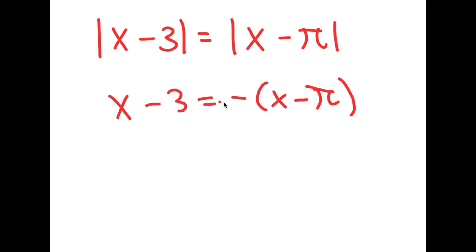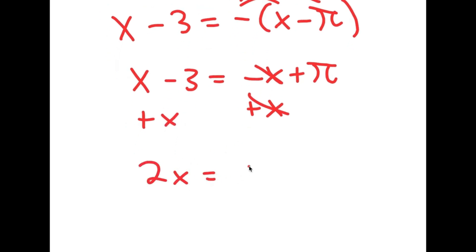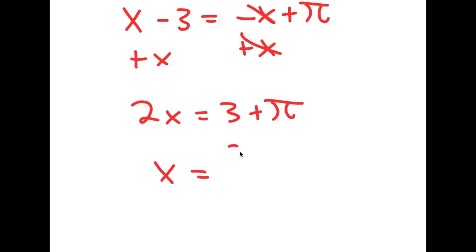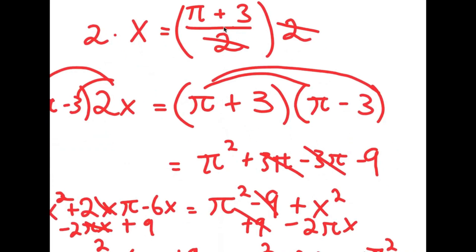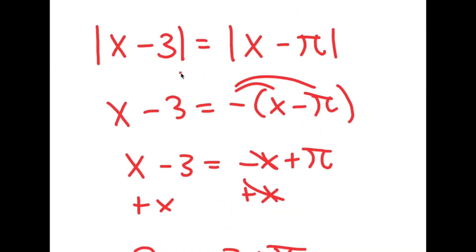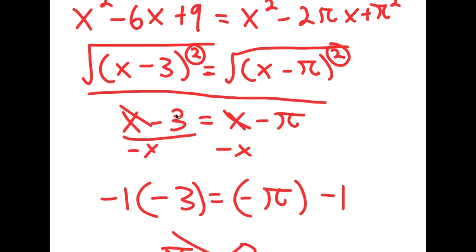To solve x minus 3 equals negative(x minus pi), I distribute the negative sign: x minus 3 equals negative x plus pi. Adding x to both sides gives 2x equals 3 plus pi, so x equals (3 plus pi) over 2 — which is exactly what we started with. That's something really important to know: the square root of a square isn't just the normal expression; it's the absolute value of that expression.